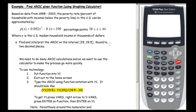Based on data from 1998 to 2003, the poverty rate — the percent of households with incomes below the poverty line in the US — can be approximated by this function. The units are percentage points, and this function is only valid for certain values of x, where x is the median household income in thousands of dollars. For instance, when the median household income is $38,000, you plug in 38 to get the poverty rate.